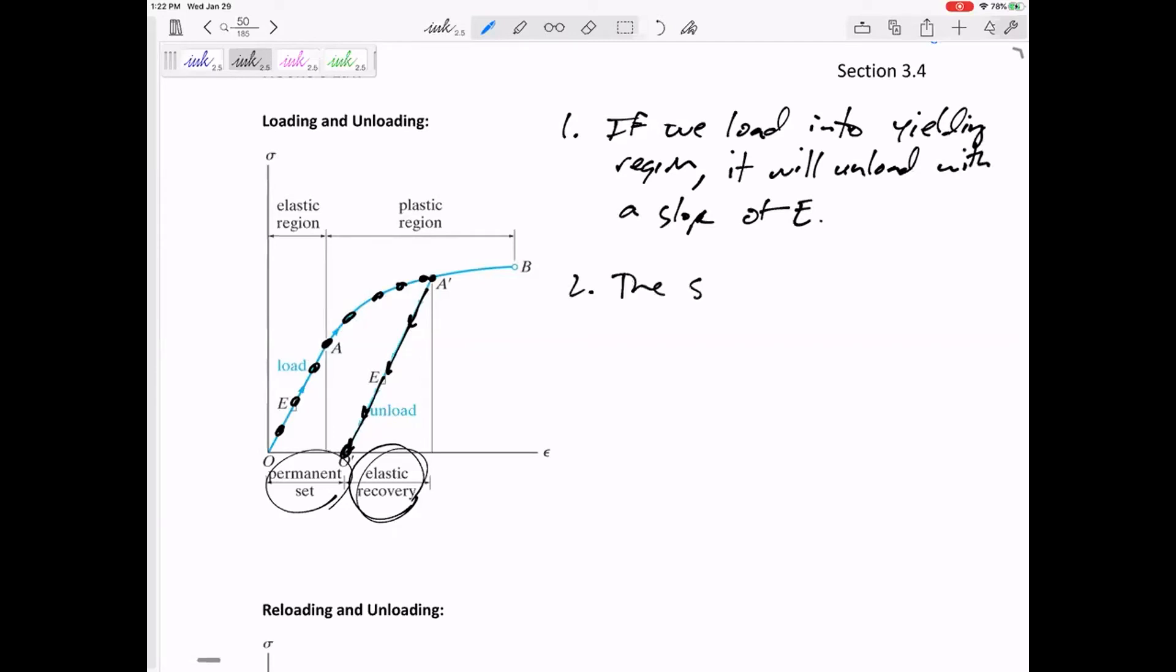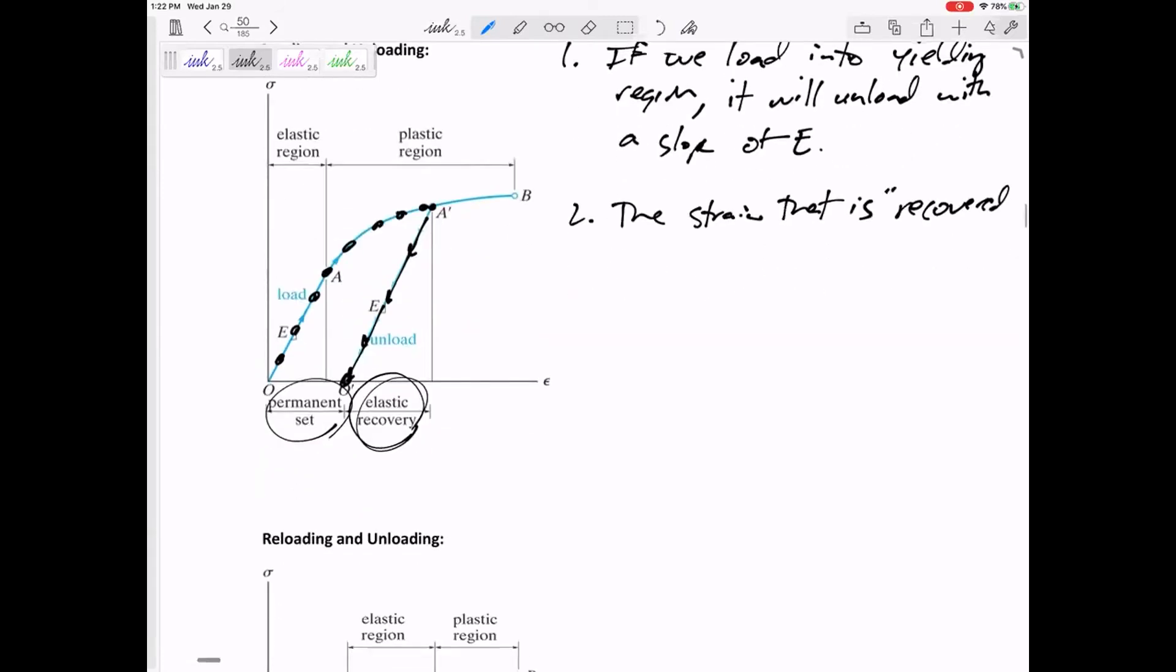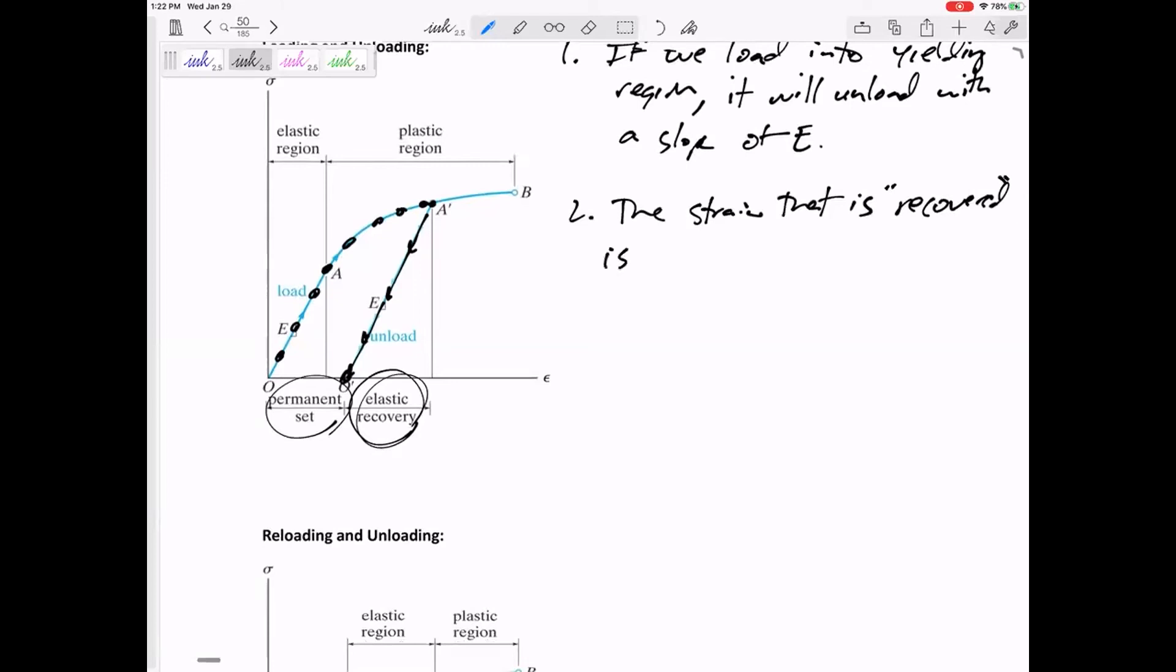The strain that is recovered, the strain that it bounces back is the elastic recovery. The strain left, that it's not recovered, is the permanent set or the permanent deformation.